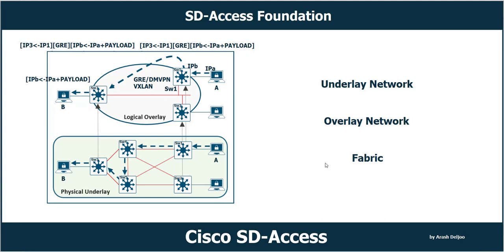In Cisco SD Access we have both overlay and underlay. To understand the architecture and components of Cisco SD Access, we need to know both. The underlay creates the foundation for the overlay. In the underlay we have physical devices — they can be Layer 2 switches, Layer 3 multi-layer switches, or routers. In most cases we use Layer 3 links and multi-layer switches. The physical underlay only forwards traffic to the destination, and the key requirement is the ability to create tunnels between edge devices.